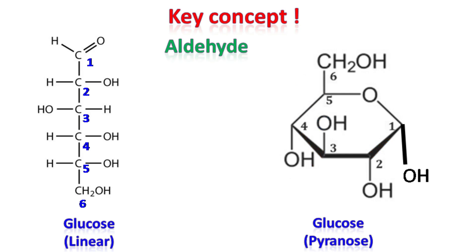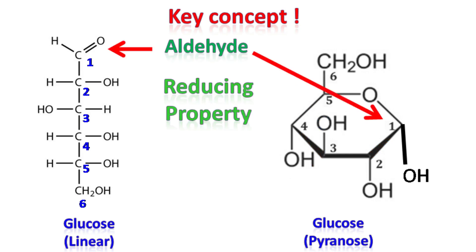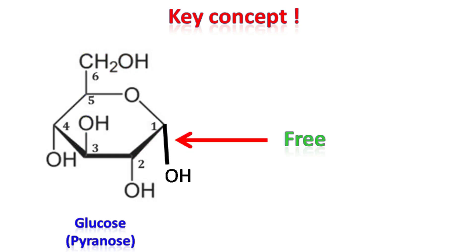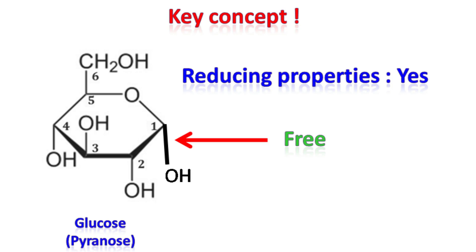It is the first carbon atom that has the aldehyde group, so the first carbon of glucose has the reducing properties. If this bond is free in a disaccharide, then the disaccharide will be reducing; otherwise it will be non-reducing.